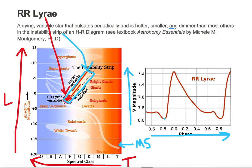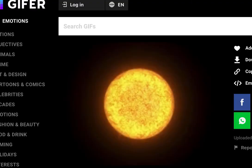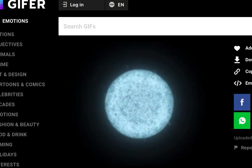So we can see that this object gets brighter, and then it gets dimmer, and then brighter, and then dimmer. Periodically, it just keeps changing its brightness. Let's take a look at an animation of an RR Lyra.